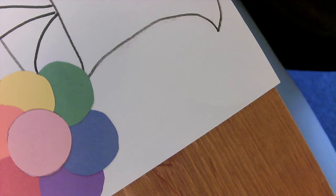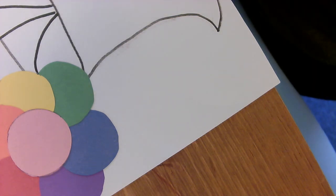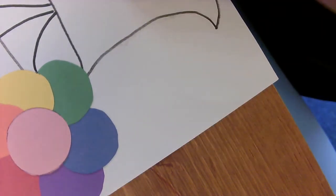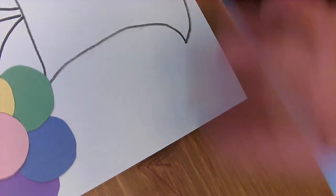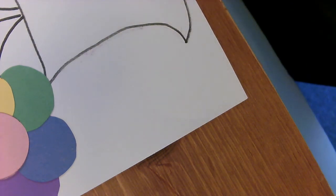Remember, I said that if you didn't have construction paper at home, that was okay. All you have to do is trace your circles onto your white sheet of paper and color them in. And that's how you can make colorful circles with white paper.